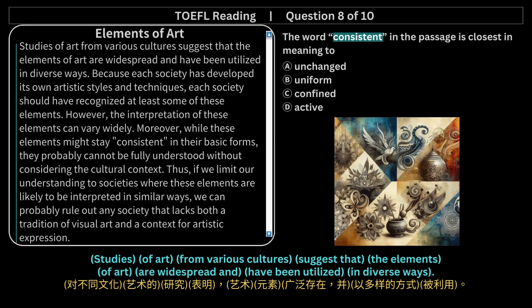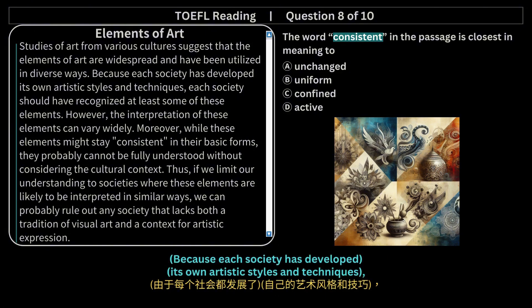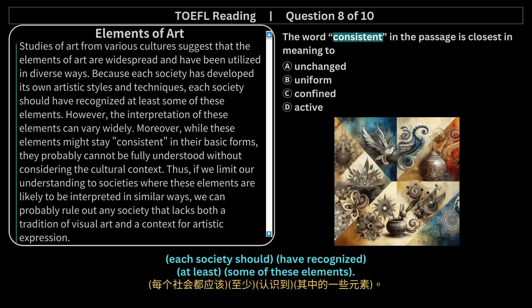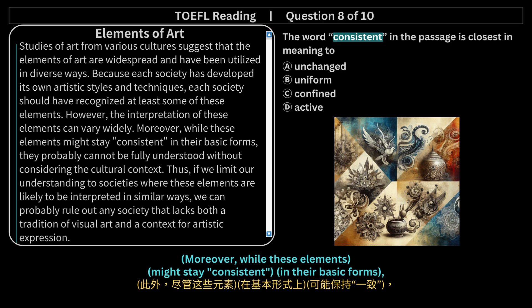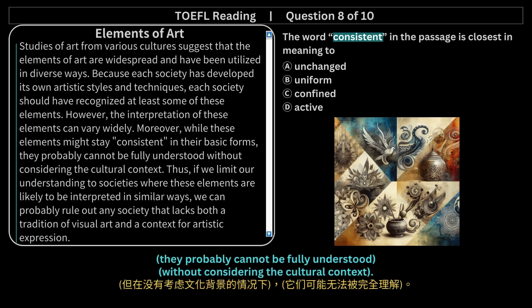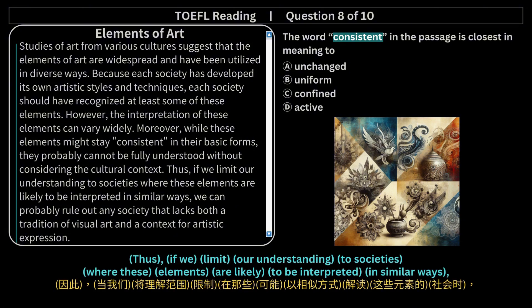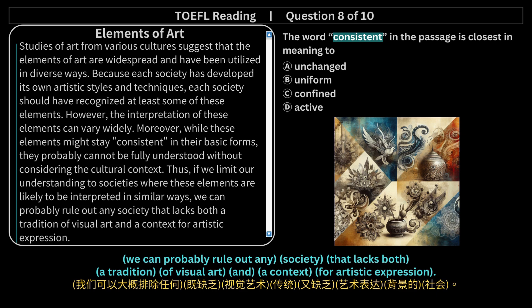Studies of art from various cultures suggest that the elements of art are widespread and have been utilized in diverse ways. Because each society has developed its own artistic styles and techniques, each society should have recognized at least some of these elements. However, the interpretation of these elements can vary widely. Moreover, while these elements might stay consistent in their basic forms, they probably cannot be fully understood without considering the cultural context. Thus, if we limit our understanding to societies where these elements are likely to be interpreted in similar ways, we can probably rule out any society that lacks both a tradition of visual art and a context for artistic expression.